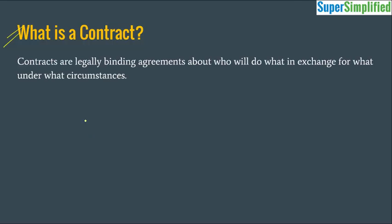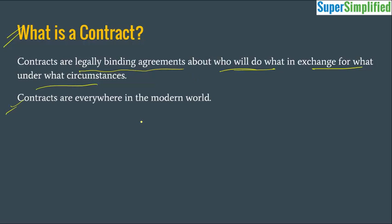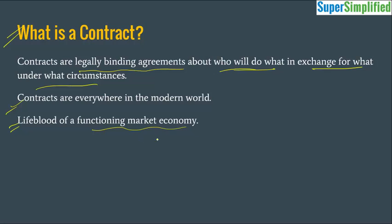A contract is a legally binding agreement about who will do what, in exchange for what, and under what circumstances. For example, when you take a life insurance policy, how much premium you will pay, for how many years, and in case of any eventuality, who will be compensated, how much, and in what case — everything is written down in the contract. Contracts are everywhere in the modern world and can be called the lifeblood of a functioning market economy.